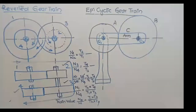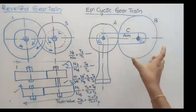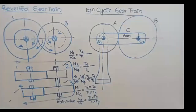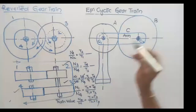In an epicyclic gear train, one of the gear wheels is both rotating and rolling, giving two types of motions: rotating motion as well as rolling motion. Due to this rotation and rolling motion, you get the epicyclic path, and that is why this gear train is called an epicyclic gear train.